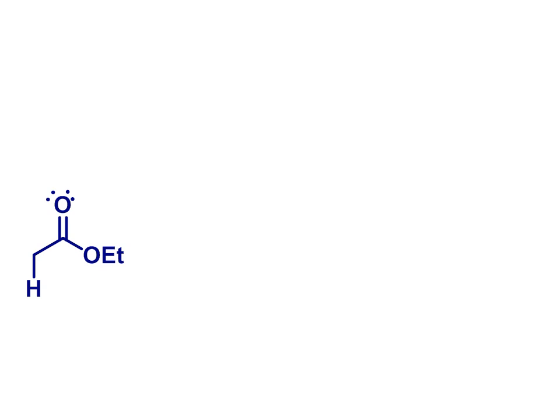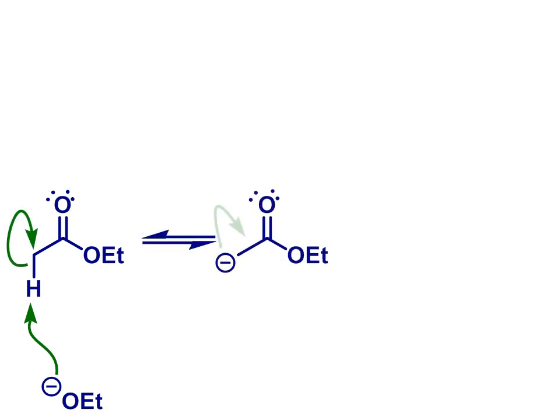One more thing. You'll remember that aldehydes and ketones are not the only carbonyl compounds that can form enols or enolates. Esters can do it too, as shown here. Deprotonating alpha to the carbonyl group gives us an enolate, which we can draw either as a carbanion or the resonance contributor with the negative charge on the oxygen.